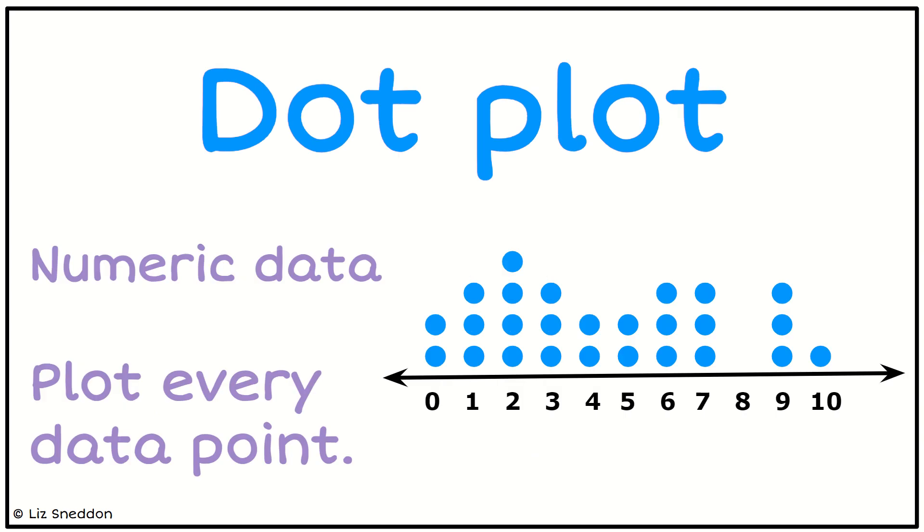Then we have dot plots. This is dealing with numeric data - continuous or discrete - and it's plotting every single data point on the graph.